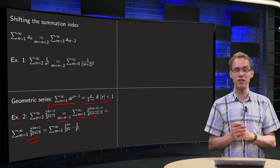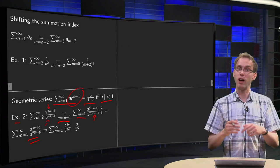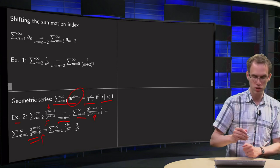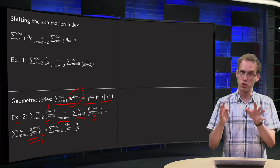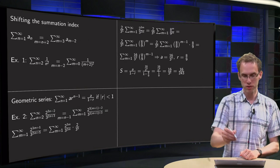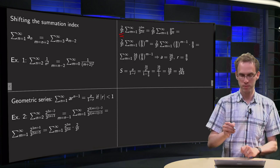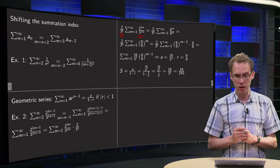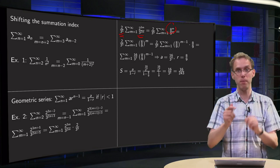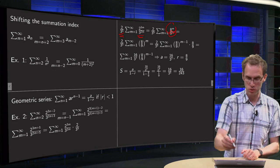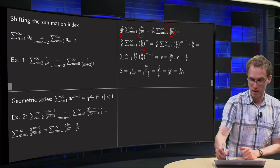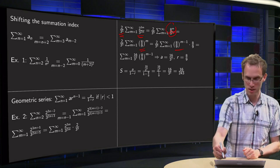We want to rewrite it completely in the form a times r to the power n minus 1. First, we split off the constants: 2 to the power 1 divided by 3 to the power 5 is just a number, and we are left with 2 to the power 3m divided by 3 to the power 2m. Now, 2 to the power 3m equals 8 to the power m, and 3 to the power 2m equals 9 to the power m, which simplifies to 8 over 9 to the power m. To get m minus 1, we write 8 over 9 to the power m minus 1 times 8 over 9.